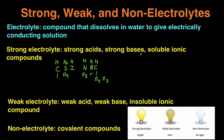The strong bases are going to be the element in the first column of the periodic table with hydroxide. So, for example, like sodium hydroxide, potassium hydroxide, and so on. And then for soluble ionic compounds, you can determine that by using the solubility rules. Those are your three categories for strong electrolytes, because all three of these categories dissociate readily into ions, and as a result the solution conducts electricity really well.